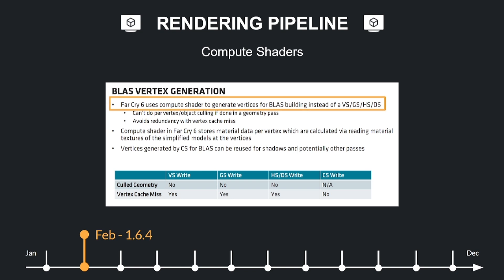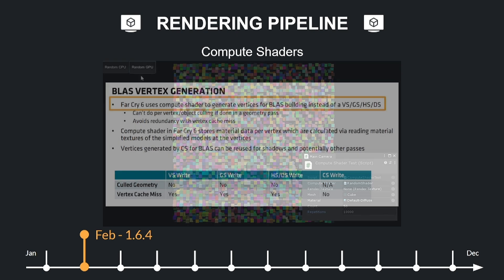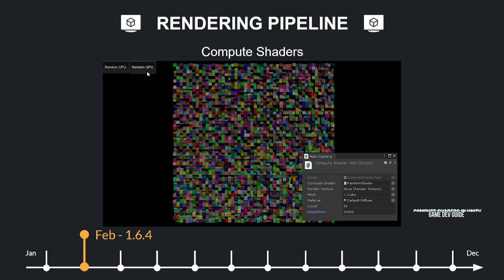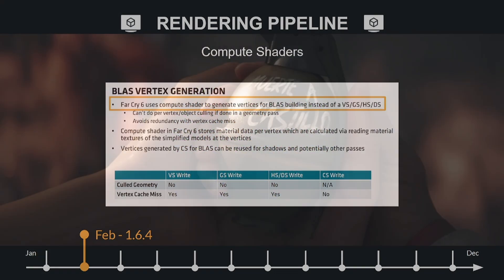Compute shaders unlock the raw computational power of the GPU, enabling very complex tasks like simulating advanced physics, generating procedural content, artificial intelligence, or just handling heavy parallel workloads. Compute shaders are available in the most powerful game engines and used in sophisticated games like Far Cry 6 utilizing their Dunia engine.